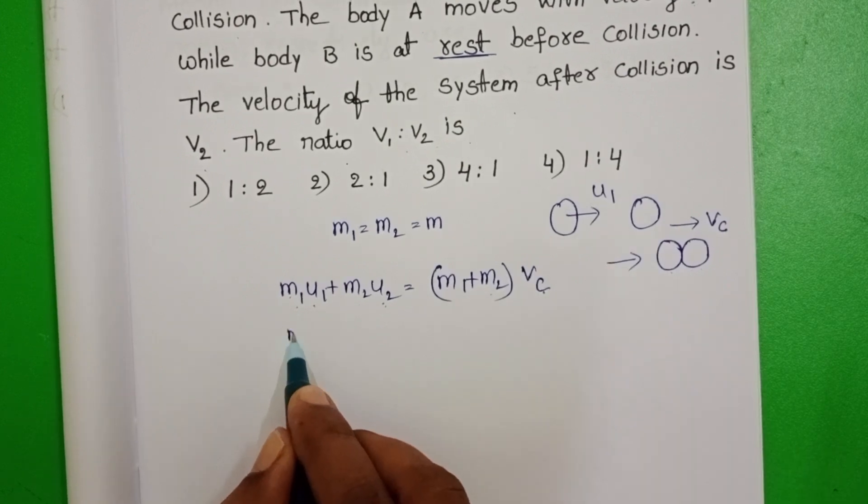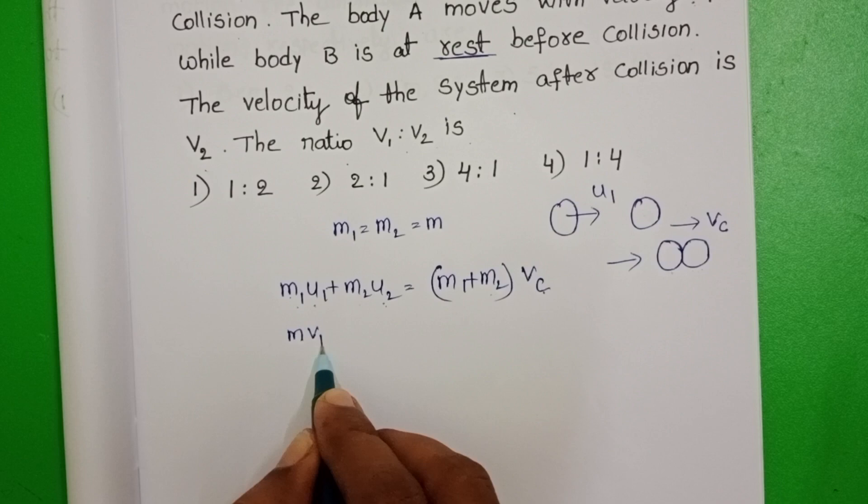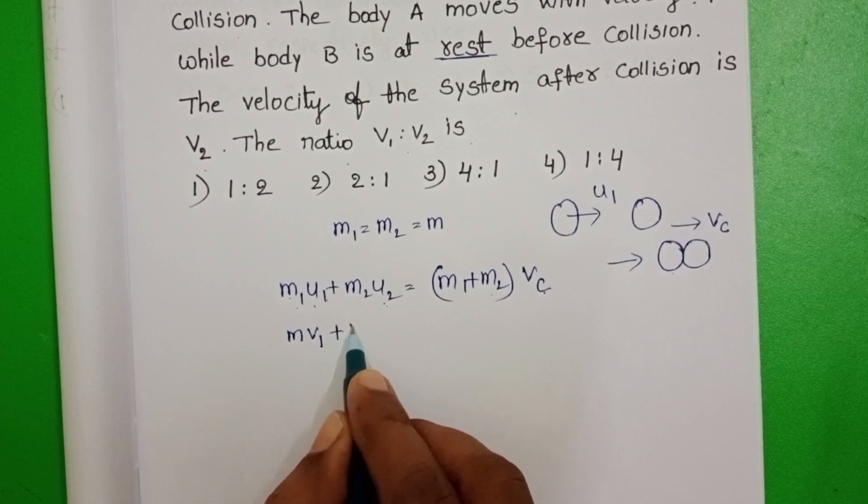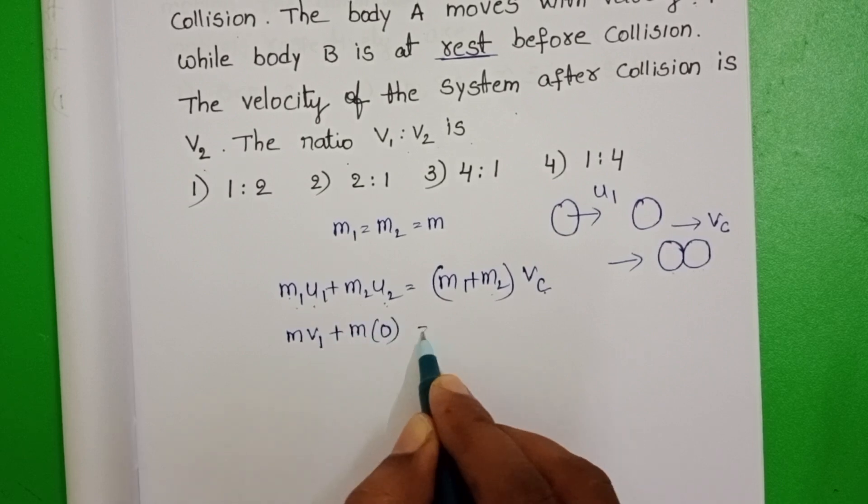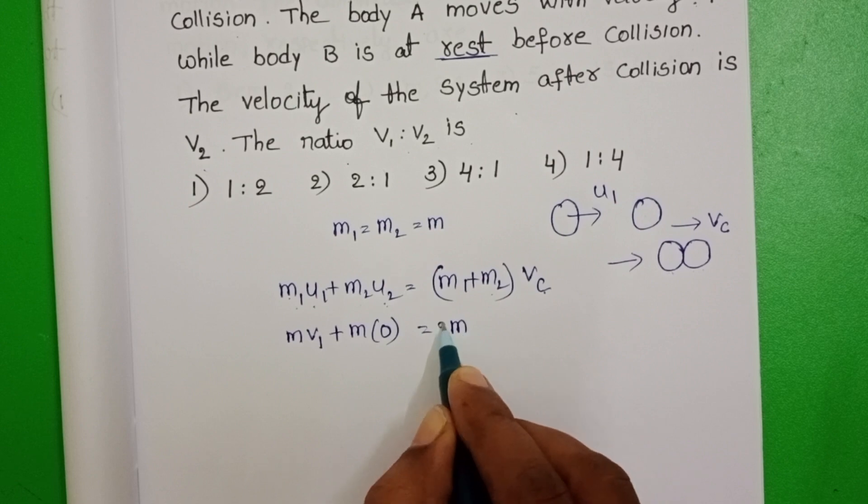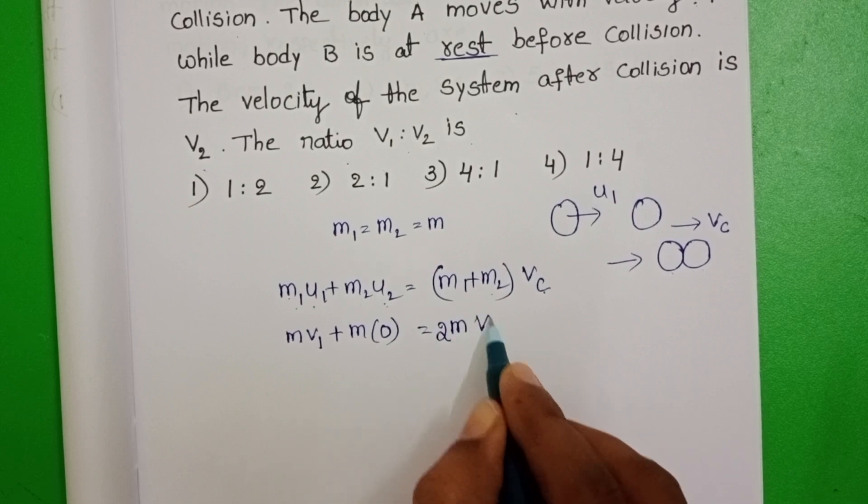Mass of the first body is M and the first body is moving with velocity V1 and the second body is at rest position. And after collision, these two bodies moving with velocity V2.